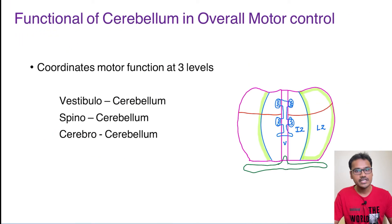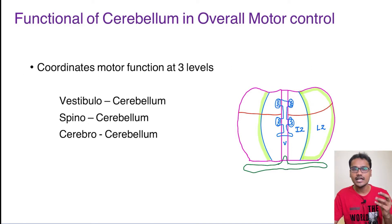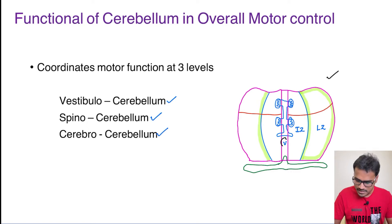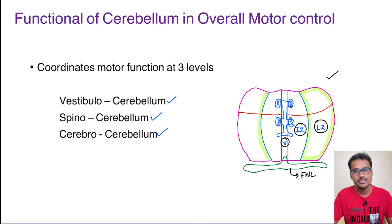Coming to the functions of cerebellum, its overall role is in the motor control system. Whenever any motor activity is going on, it enhances it or does some corrections in that motor activity. It does this function at three levels: the vestibulocerebellum, the spinocerebellum, and finally the cerebrocerebellum. Here V represents the vermis, IZ is for the intermediate zone, and LZ is for the lateral zone. These are the functional divisions in the cerebellum, and below this we have the flocculonodular lobe.